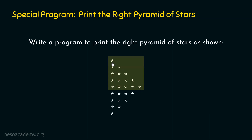In the first row we have one star, in the second row we have two stars, in the third row we have three stars, and so on. So if the number of rows entered by the user is five, we know how to print this pattern on the screen. The remaining pattern will also be printed later on, but first we will write the program to print this pattern correctly.